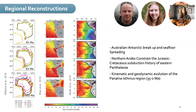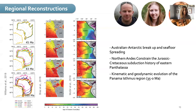Let's start with the virtual earth components and the reconstruction model, beginning with some regional reconstructions. Here you have an example of different refinements done by Simon, Carmen, and others in 2018. For example, you have the refinement of the Australian-Antarctica breakup, the Northern End refinement, and the kinematic and geodynamic evolution of the Panama Isthmus region.